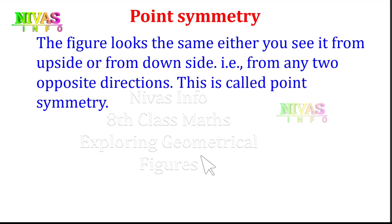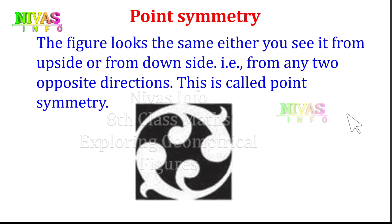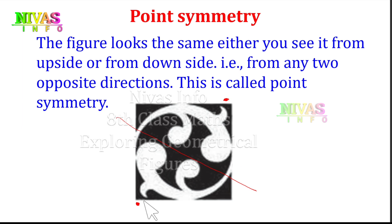Point symmetry: we have an image here. We divide this image into half. If I take this half, I change this point. I change the shape and the pattern to the opposite side. The same half is changed to the opposite. That pattern is point symmetry.